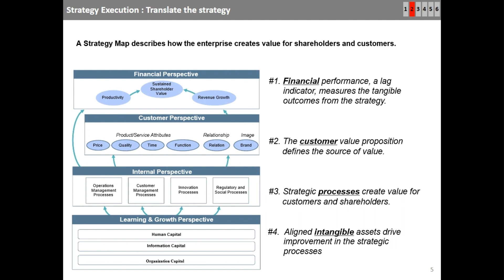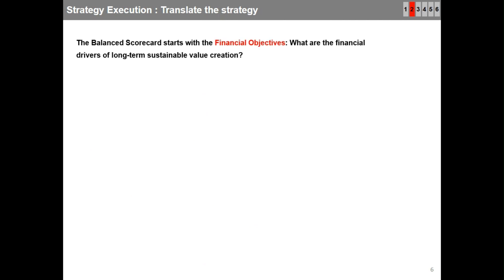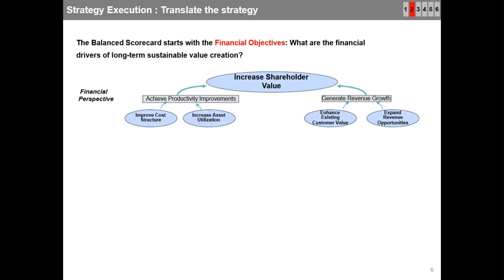The balanced scorecard starts with financial objectives by asking: what are the drivers of long-term sustainable value creation? Organizations generally look to generate revenue growth on one hand and achieve productivity on the other. The strategic objectives showcasing this are: enhance existing customer value, expand revenue opportunities, improve cost structure, and increase asset utilization.